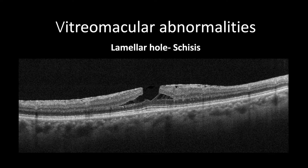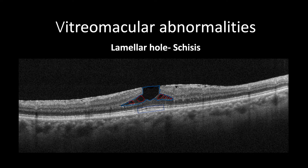Lamellar holes secondary to vitreo-macular abnormalities have two ways to progress. The first is due to vitreo-macular traction, which causes intraretinal tubular cystic changes forming schisis between the outer plexiform and outer nuclear layer in a mustache appearance with a relatively intact ellipsoid zone. The wider the inner edges of the lamellar hole, the more thinning there will be. The schisis itself will cause a relative scotoma. However, in severe cases, there would be small cystic formation at the level of the inner plexiform layer.